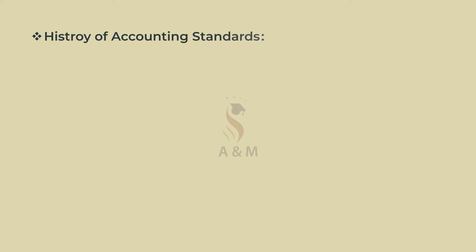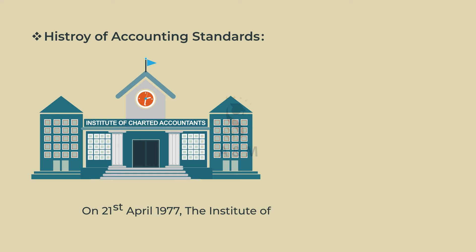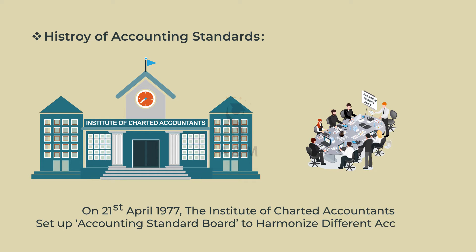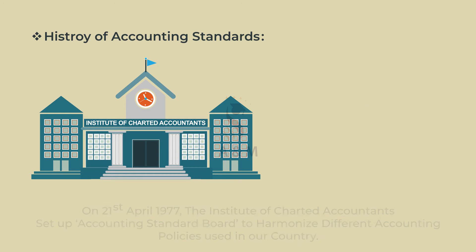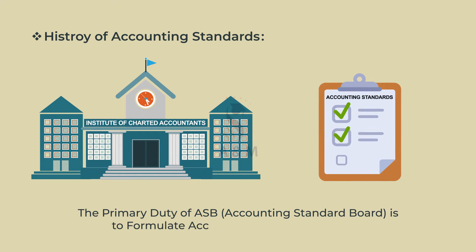First of all let us know about the history of accounting standards. On 21st April 1977, the Institute of Chartered Accountants set up the Accounting Standards Board to harmonize the different accounting policies and practices used in our country. The primary duty of ASB, that is the Accounting Standards Board, is to formulate accounting standards for India. These standards are established by the Council of the Institute in India.